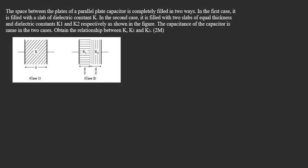In this question, you can see case 1. In case 1, the capacitor is filled with a dielectric constant k. We can write down the capacitor value which is equal to k epsilon 0 A by d. This is the capacitance of the first capacitor.